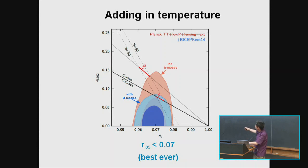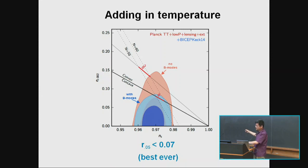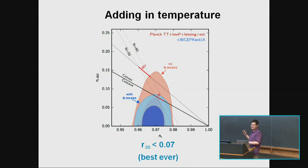The φ² model is already almost 3-sigma disfavored. Starobinsky also reminded us we've already disfavored most convex models, which some people prefer over the plateau-type models. So this is where we are when we throw in everything.